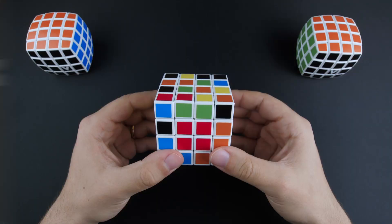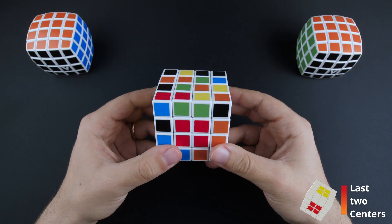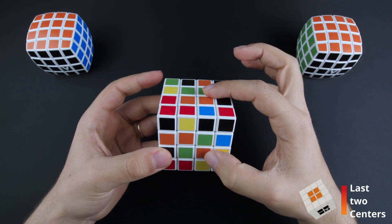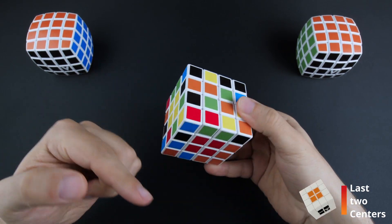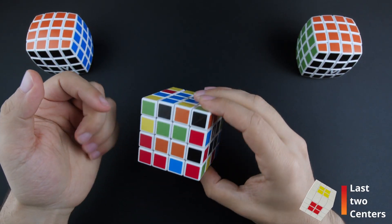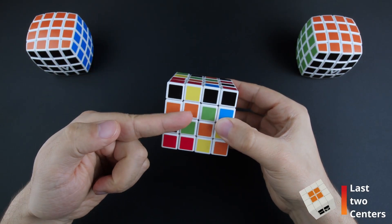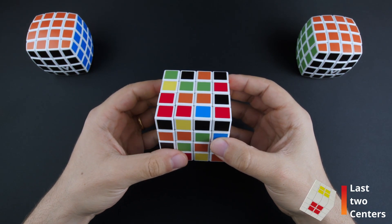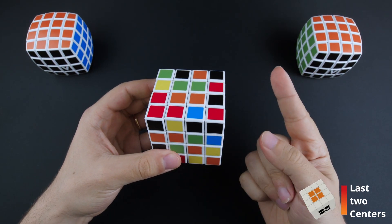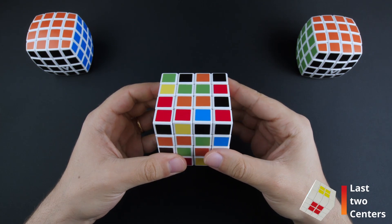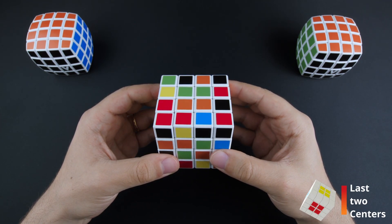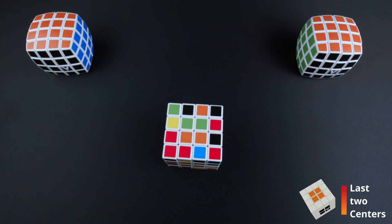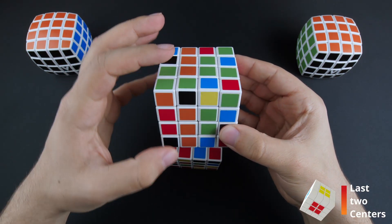The last two centers. Now we only have to solve two centers, the green and the orange. Obviously, the orange should be opposite of the red, and the green should be opposite of the blue. There is a nice trick for the last two centers. We only have to focus on solving one of them, and the other center will be solved automatically. Let's go for the orange. Ideally, to solve it, you need to form two orange bars to solve it like before.